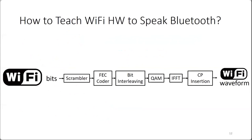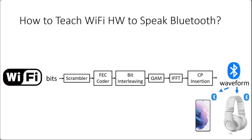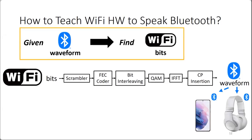BlueFi works with unmodified Bluetooth devices using real widely-adopted Wi-Fi chips, supports not only broadcasting but also general Bluetooth applications, and operates in real time for applications such as audio streaming. The key observation is that if the analog waveform output of Wi-Fi hardware looks like a legitimate Bluetooth waveform, commodity Bluetooth devices will decode it without trouble. The problem then becomes: given an arbitrary Bluetooth waveform, find the corresponding Wi-Fi bits, and apply that reverse mapping.